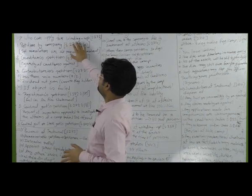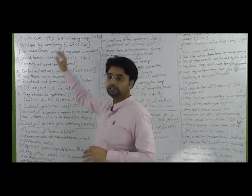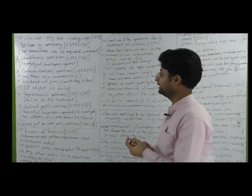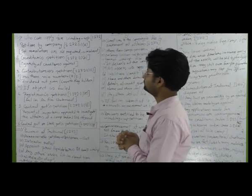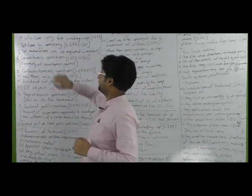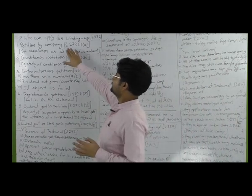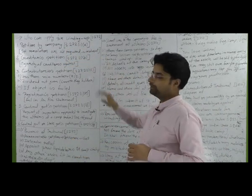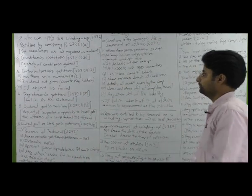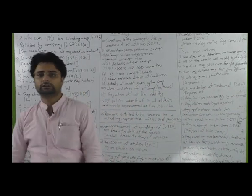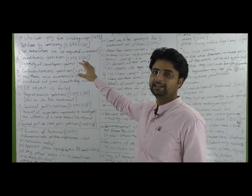First of all, who can apply for winding-up? We are reading compulsory wind-up by the tribunal. The first point is petition by company — Company के द्वारा भी आवेदन किया जाता है, जो कि Section 272 Subsection 1A में बताया गया है। Company के द्वारा जो petition दायर की जाती है उसके लिए special resolution लाया जाता है — majority basis पर वो special resolution के आधार पर company परिसमापन के लिए आवेदन करती है।